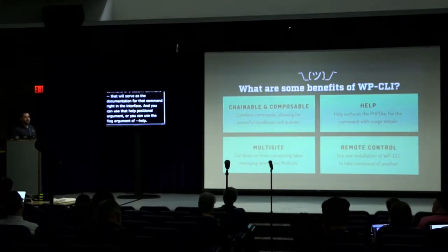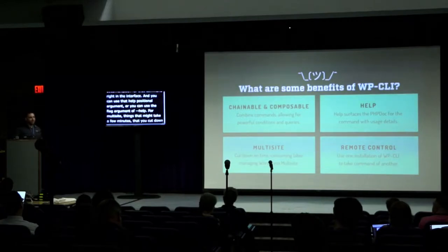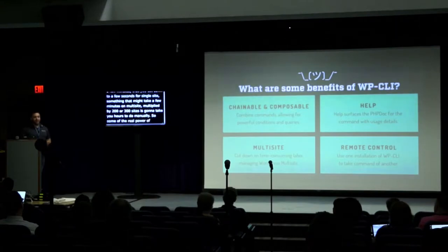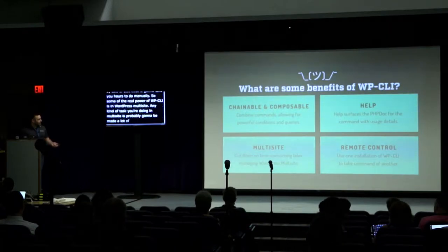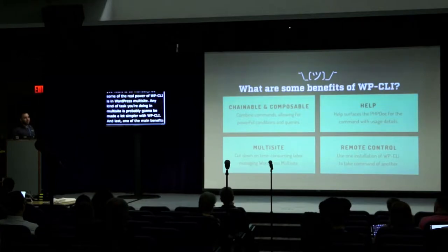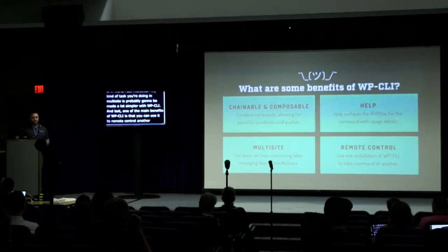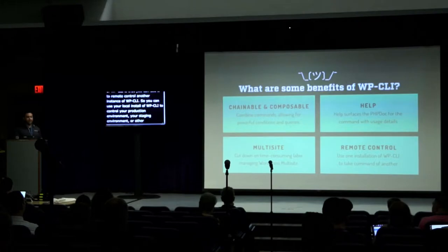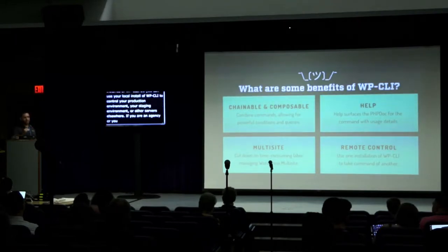For multi-site, things that might take a few minutes get cut down to seconds. For a single site something takes a few minutes, but on multi-site multiplied by 200 or 300 sites it could take hours to do manually. So some of the real power of WP-CLI is in WordPress multi-site. Any kind of task you're doing in multi-site is probably going to be made a lot simpler with WP-CLI. Also, one of the main benefits is that you can use WP-CLI to remotely control another instance. You can use your local install to control your production or staging environment. If you're an agency managing lots of sites, you can set up aliases for each site and remote-control all of them from one place.